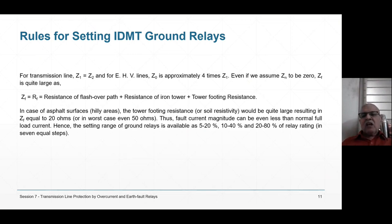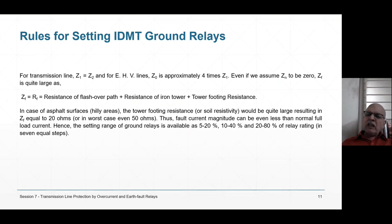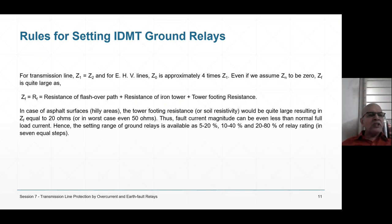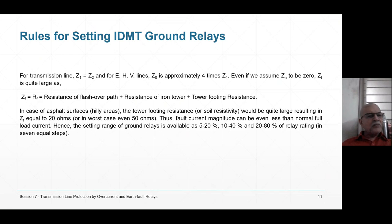In older electromagnetic versions, three sensitivity ranges were available: 5–20% in seven equal steps (5, 7.5, 10, 12.5, 15, 17.5, 20), also 10–40% and 20–80%. In numerical relays, the range is now 1–20% or 1–40% in steps of 1%, so setting is straightforward. These are all important concepts: how to set the relays is required in numerical relays just as before — concepts are permanent even as the methodology changes.